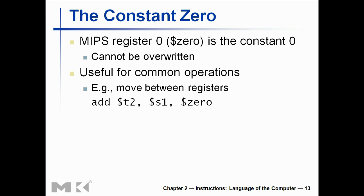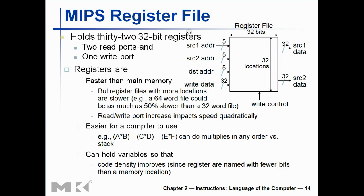Now let's see a figure of the MIPS register — that's 32 registers. This is source 1 — s1, s2, whatever we write. This is source 2. This is the destination, as I keep telling you. And this is where we write data — write control, source 1 data, source 2 data. I think it's better to discuss this later when we talk about data paths, so let's skip it for now.